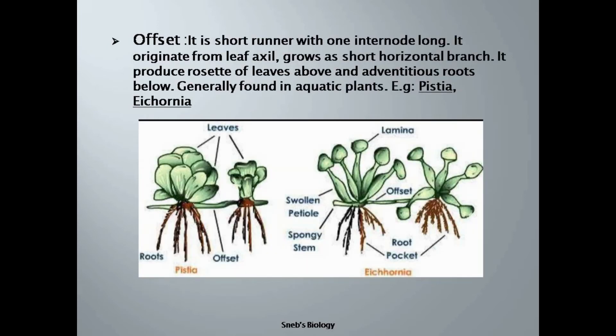Next comes another similar type of modification — offset. Offset is aquatic, so the plant grows on the surface of water. Here the stem is swollen because it has aerenchyma, which helps the plant to float. From this stem arises a transverse branch; the branch is also swollen and arises in all directions. The branch is normally one internode long. The leaves arise from this stem, producing a rosette of leaves above and adventitious roots below. For example, Pistia, Eichhornia, etc.